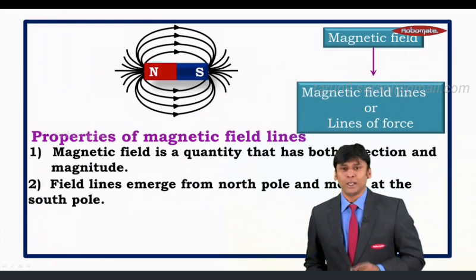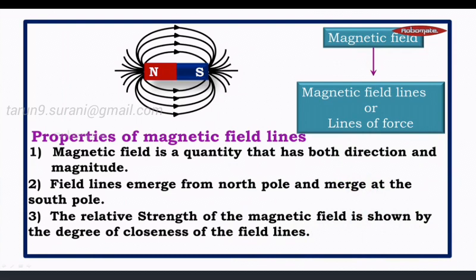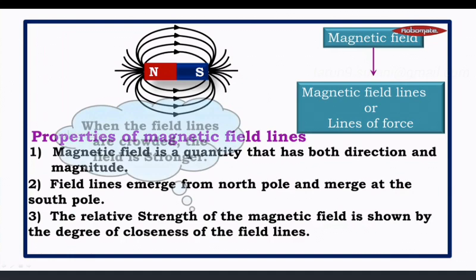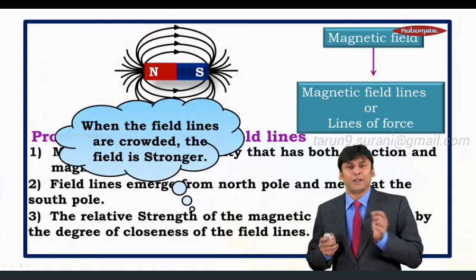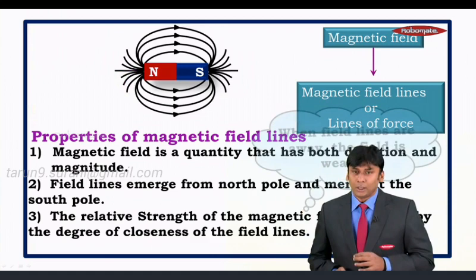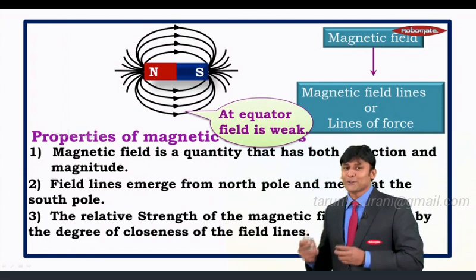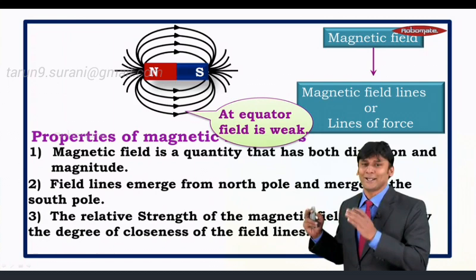The third property: the relative strength of the magnetic field is shown by the degree of closeness of the field lines. When field lines are crowded — that is, close together — the field is stronger, as seen at the poles. When field lines are spread apart, the field is weaker, as seen at the equatorial region of the magnet.